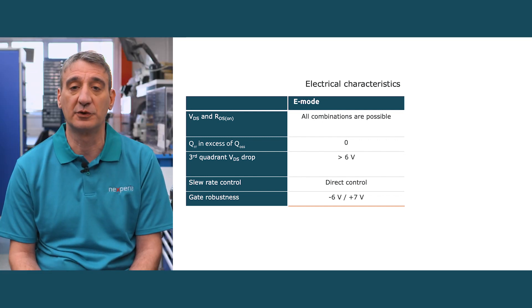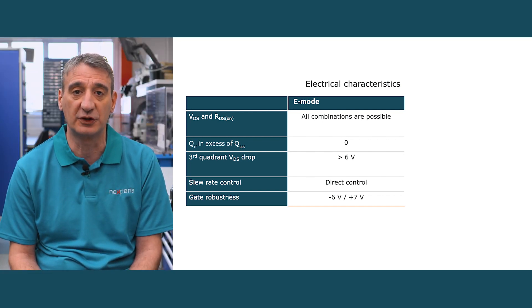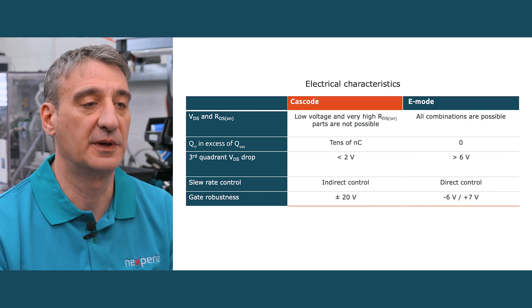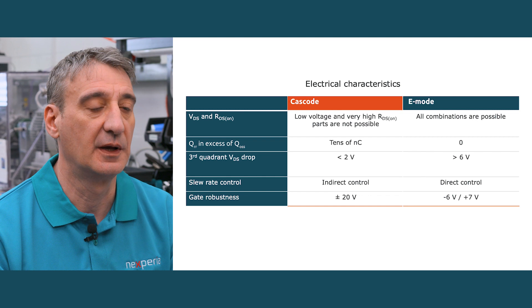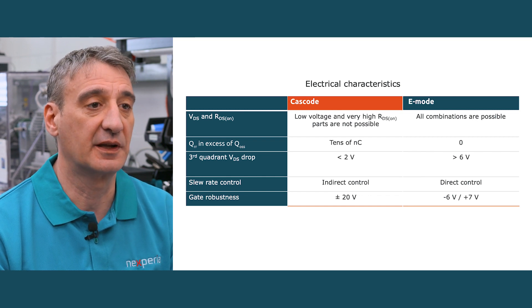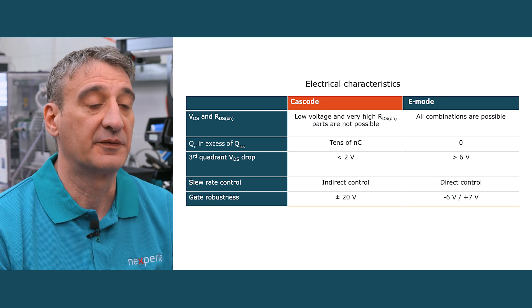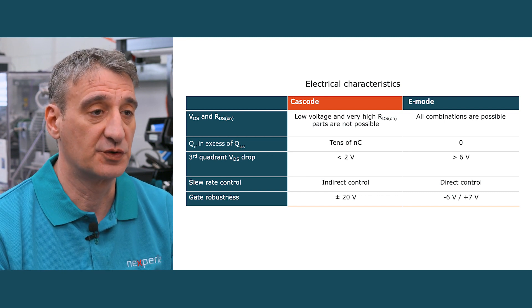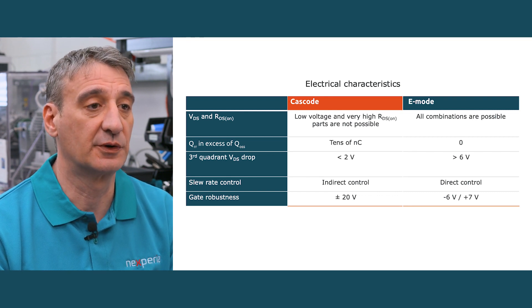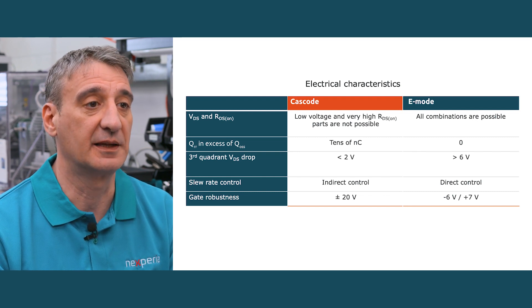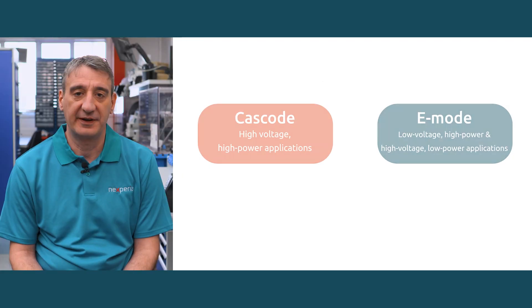The gate robustness is -6 to +7 volts. For cascode, low voltage and high RDS-on combinations are not possible. The QRR value is in the range of tens of nanocoulombs. The third quadrant VDS drop is lower than 2 volts, the slew rate control is indirect, and it has a robust gate withstanding ±20 volts.